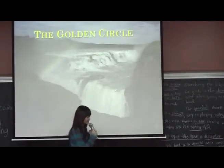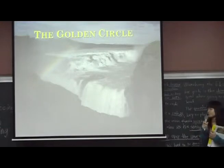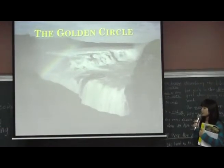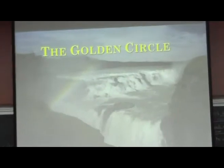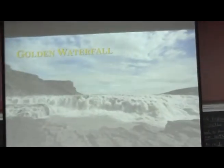The Golden Circle is called Jingquan in Chinese. It's not a place but a traveling route with some famous attractions such as the Golden Waterfall and the National Park.